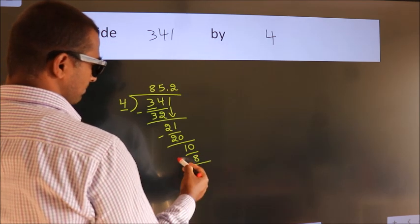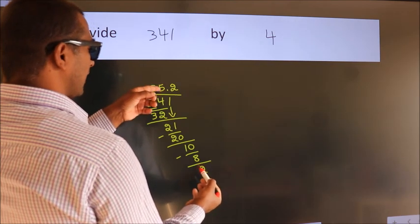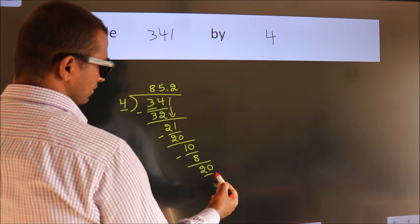Now we subtract. We get 2. After this, we already have the decimal, so directly take 0. So 20.